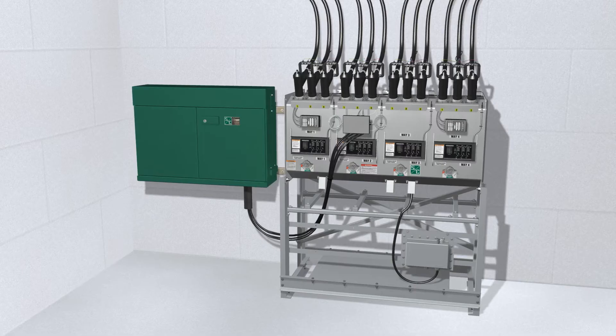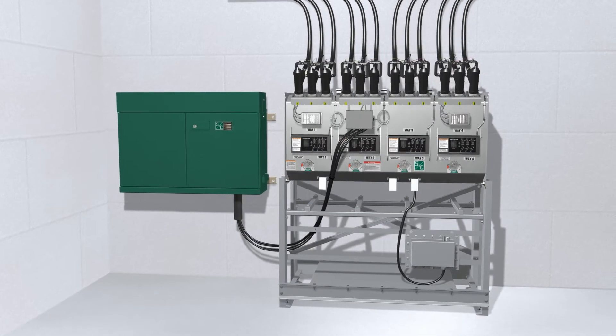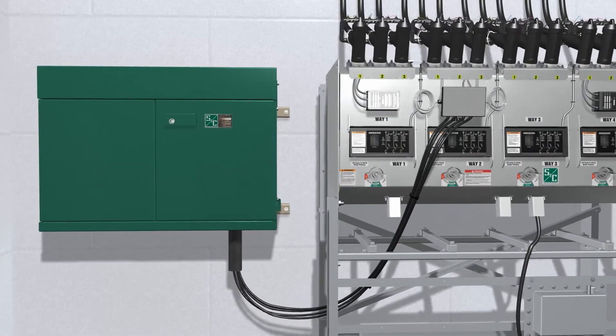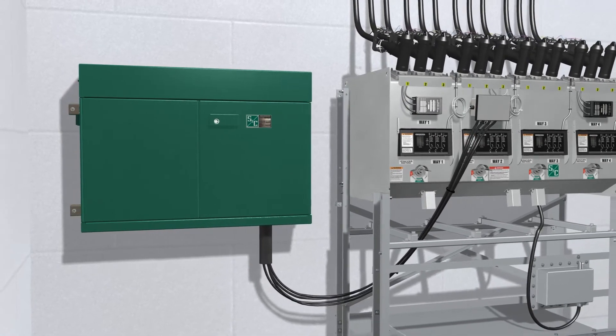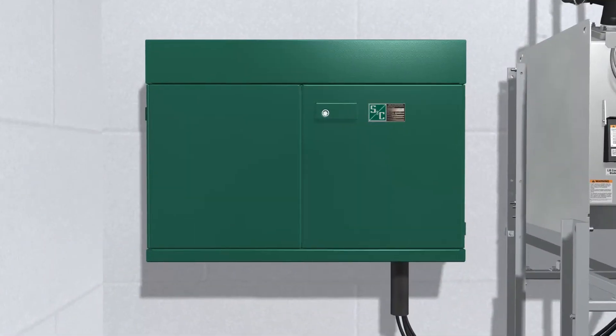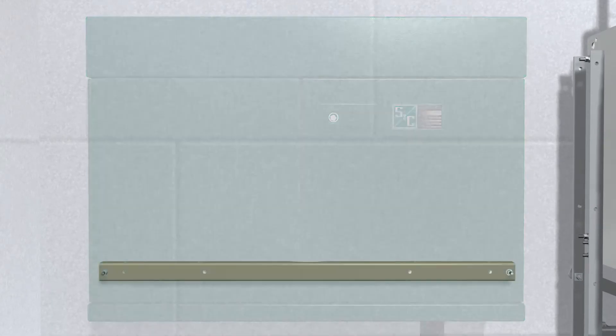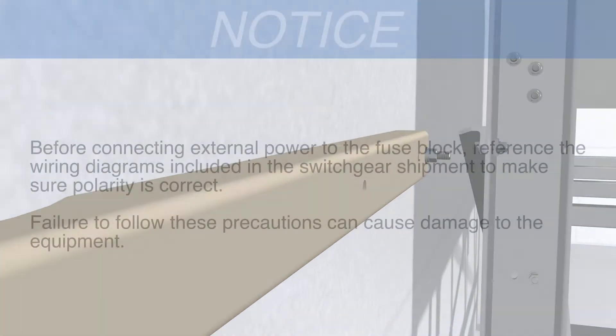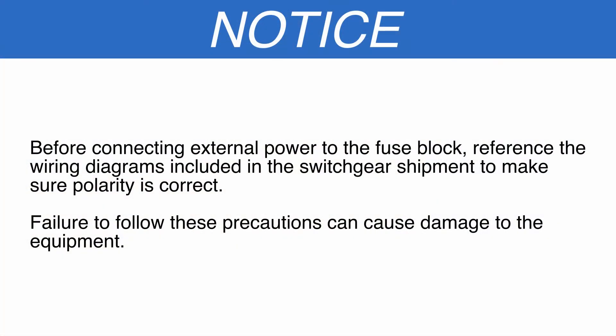When grounding the low voltage enclosure to the Vista switchgear tank, it is important to have one solid ground connection from the low voltage enclosure to the Vista switchgear tank. Provisions for ground wires and clamps on the low voltage enclosure are provided on the bottom mounting channel. Notice, before connecting external power to the fuse block, reference the wiring diagrams included in the switchgear shipment to ensure proper polarity. Failure to follow these precautions can result in damage to the equipment.